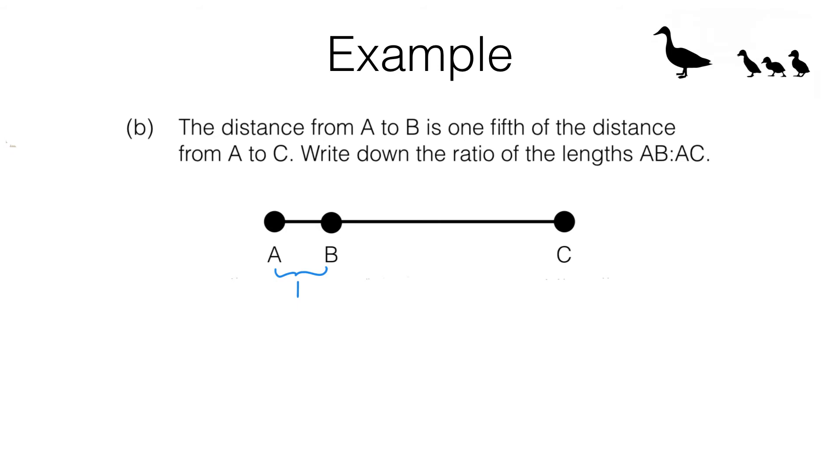Now if that distance is one squile what is the distance from A to C? Remember the distance from A to B is one fifth of the distance from A to C. So if this is one fifth of the total distance that total distance from A to C must be five squiles. Don't forget squiles were my made-up unit of measurement.